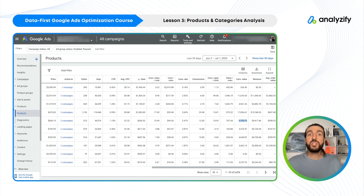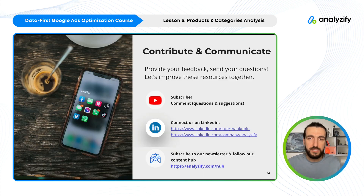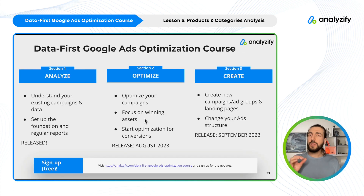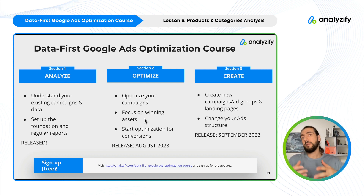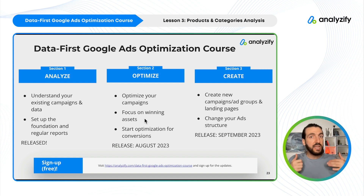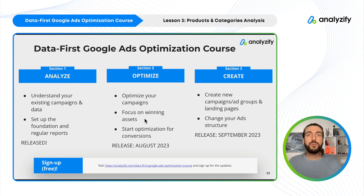Ideally, in section two of our course we will be talking about this — the optimize section — where I'll give you strict tips and tricks about what to do with this information. There are winning products, and you may need to create a new campaign of winning products and so on. But for now we are in section one: Analyze. We are trying to analyze and understand. Now you know which products and collections are doing well with PPC performance.